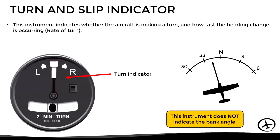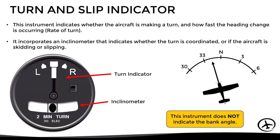This instrument has another function: it incorporates an inclinometer at the bottom, which allows measurement of the quality of the turn. In other words, it allows the pilot to know if the aircraft is flying coordinated, skidding, or slipping.